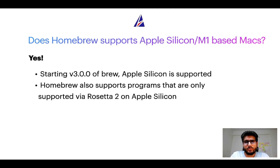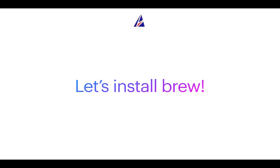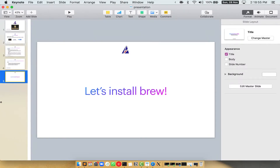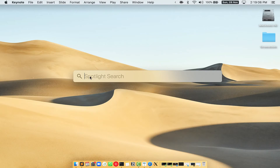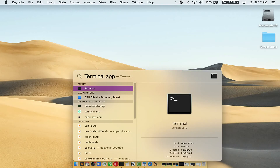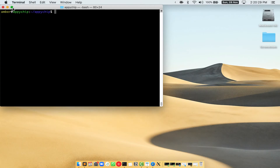Now that I have answered your questions on safety and compatibility of Homebrew, let's get to the installation process. Before we can install anything using Brew, we need to install the package manager itself on your Mac. To open the terminal, press Command and Space on your keyboard to open Spotlight Search, then type terminal.app. You will see the Terminal app — simply double-click on it to open it. Let me maximize this terminal window.